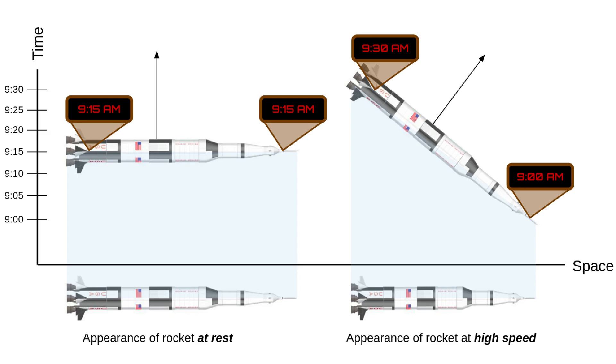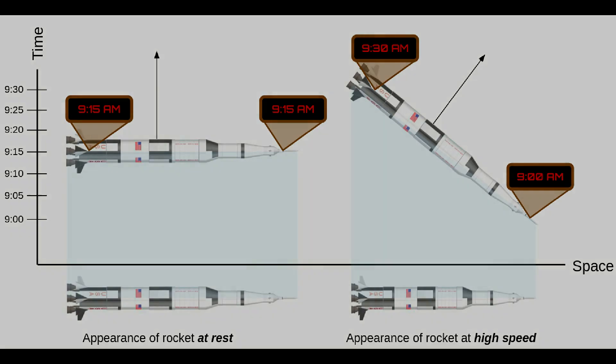For example, two clocks, one at the front and the other in the rear of a rocket, agree on time when the rocket is at rest. When moving, however, the clock in the rear will run ahead of the clock at the front. If either clock is brought to the location of the other in the direction of motion, the clocks will agree, but when separated along the direction of motion they disagree. Each end of the rocket is in a different time and of a different age. The rocket really does reach through time.